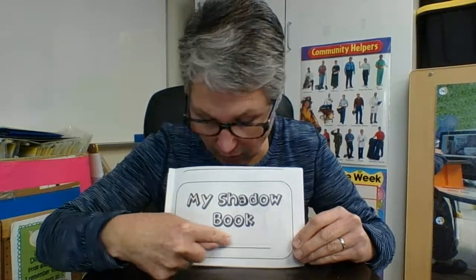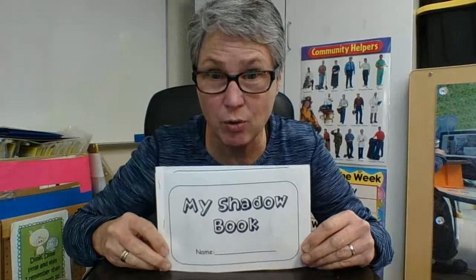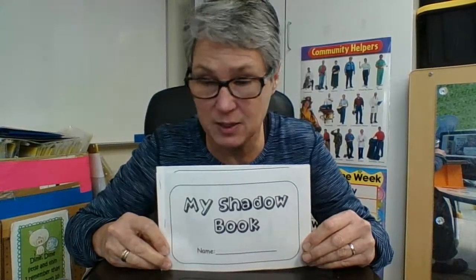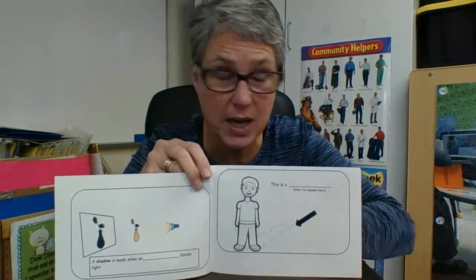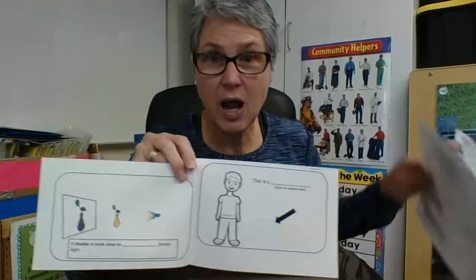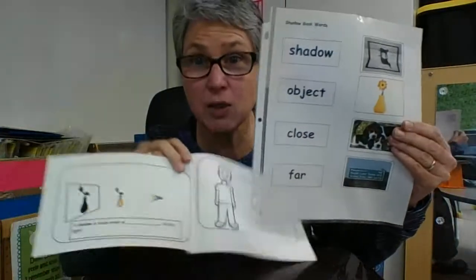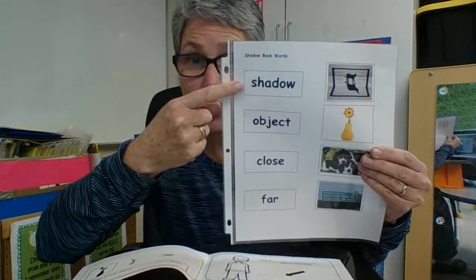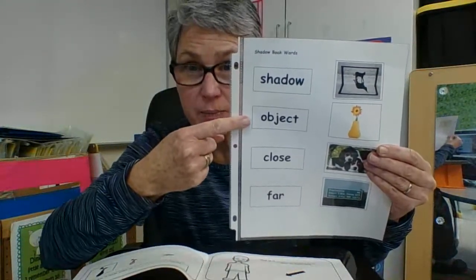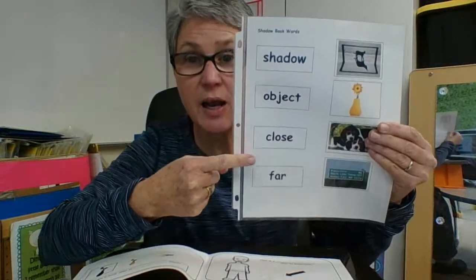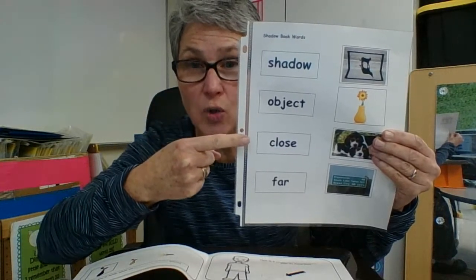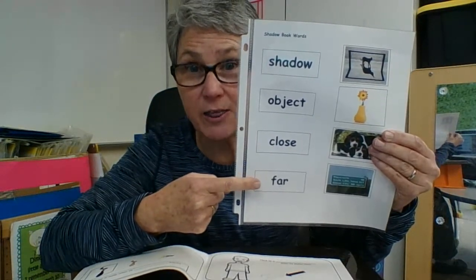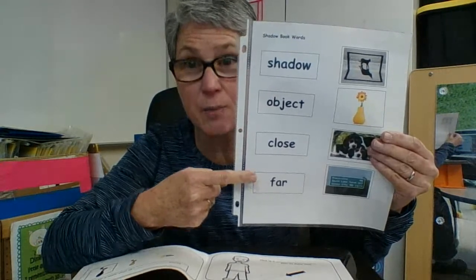Down here is where I'm going to put my name so that people know this is my work filled out in this book. And as I open it, I can see that there are words missing on some pages, and I'm going to need to fill those words out. Lucky for me, I have a word bank. The word bank has the words: shadow, object, close, far. I'm going to need those words to help me fill in the blanks on my book.